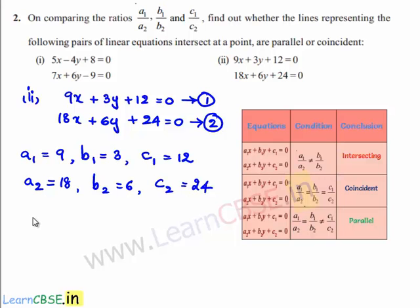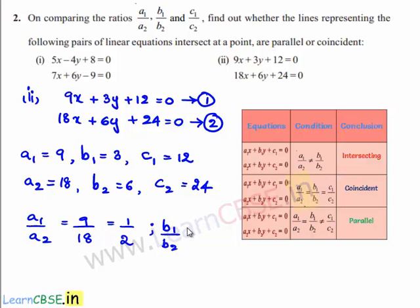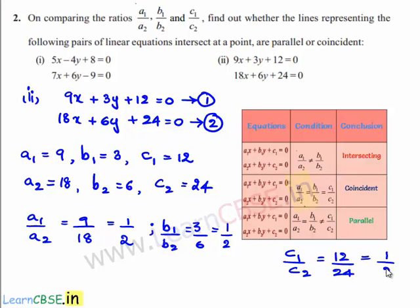So let us find a1 by a2, which is nothing but 9 by 18, which is 1 by 2. And b1 by b2 is equal to 3 divided by 6, which is nothing but 1 by 2. And c1 by c2 is equal to 12 divided by 24, which is nothing but 1 by 2.